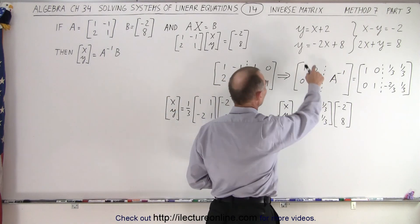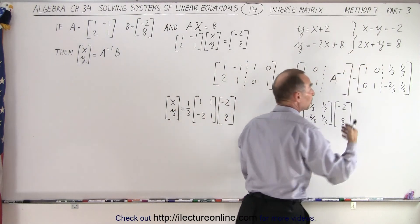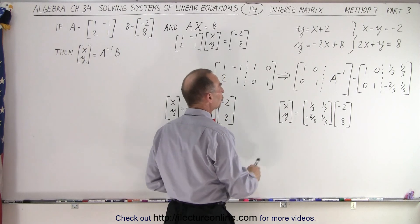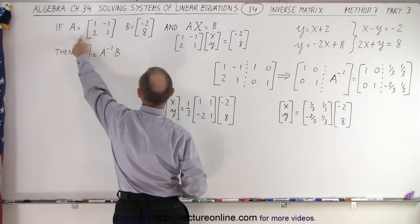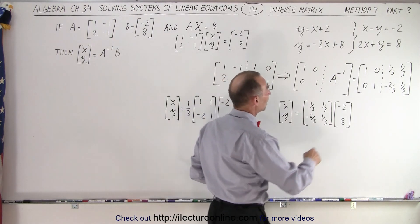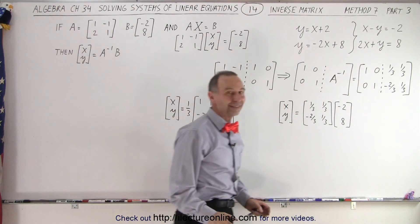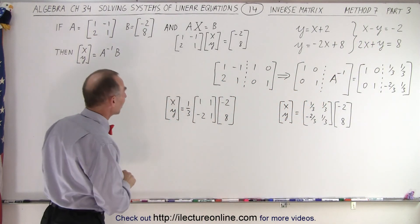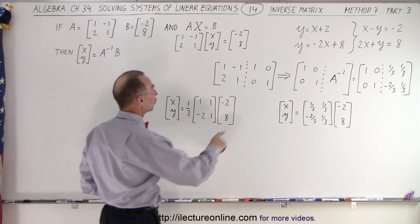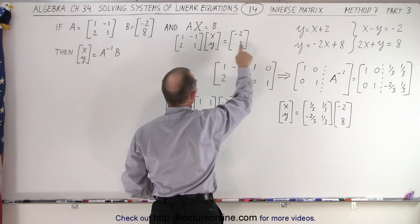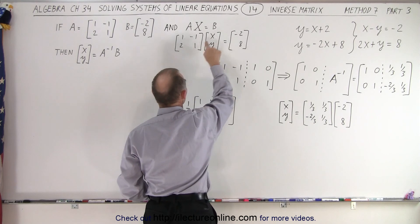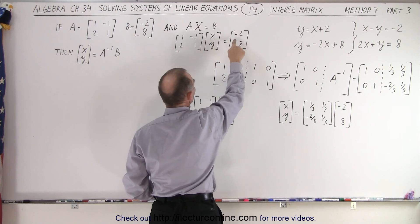So again, we have our two equations. We change them into the format so we can put them into a matrix format. Notice we create two matrices, A and B, where the A matrix is the coefficients of the x and y variables and the B matrix is the constants on the right side of the equal sign. And then we can write those two equations in this matrix format, where the A matrix times the x and y matrix equals the B matrix.